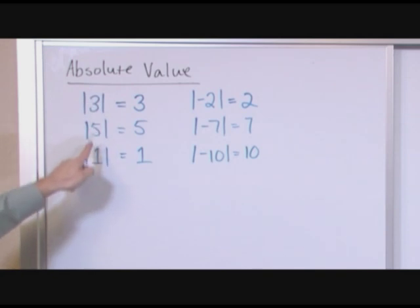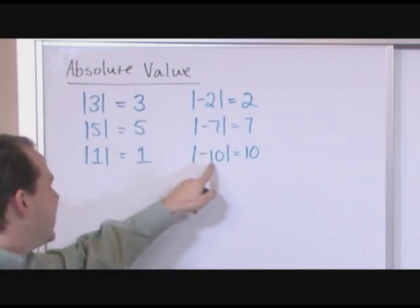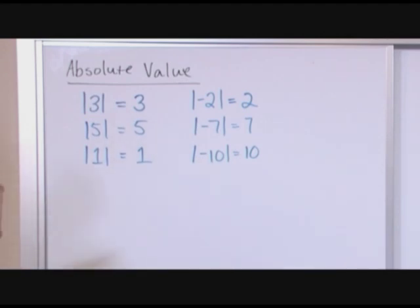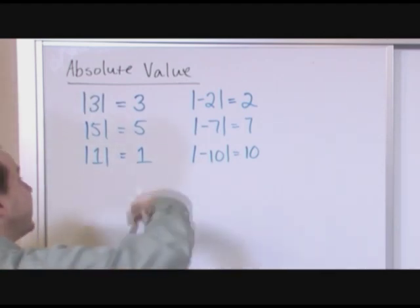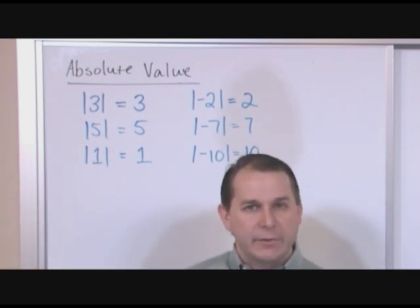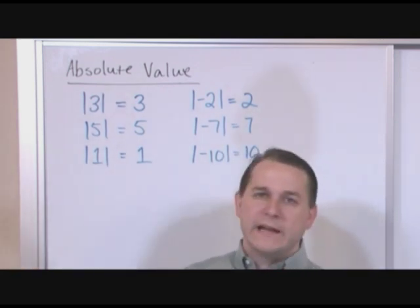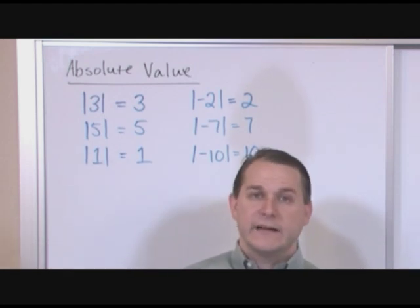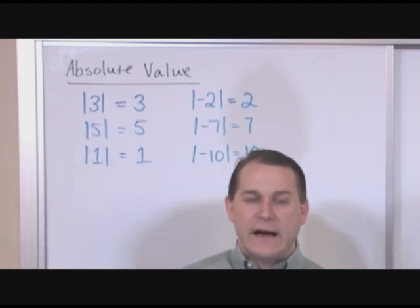So you can see whatever number you put in the inside of these little brackets here, whether it's positive or whether it's negative, no matter what you put in there, the absolute value is going to take the sign away. It's gonna strip the sign off. If it's positive, it's gonna stay positive. If it's negative in there, you strip that negative away and the answer is positive. So that is the absolute value.